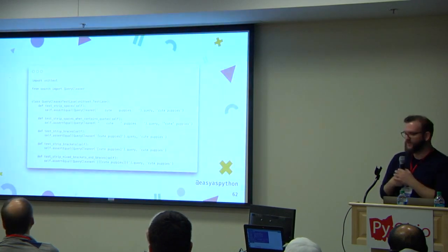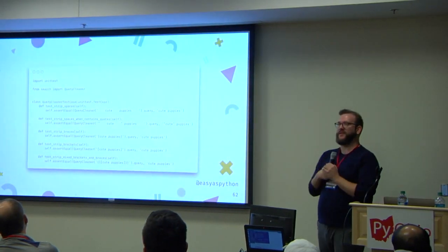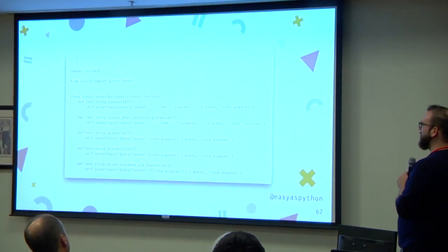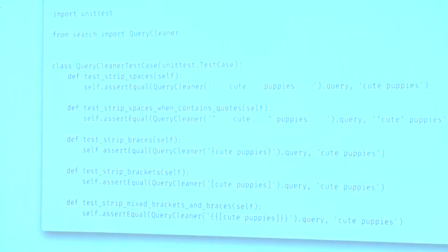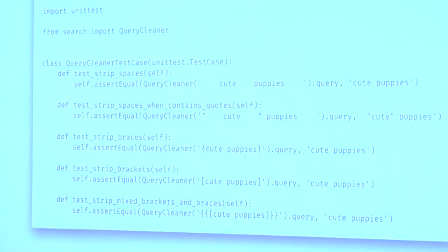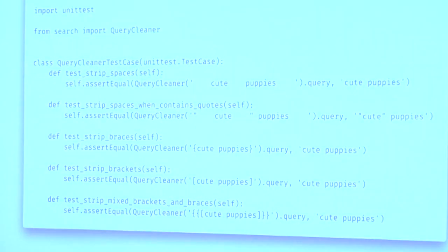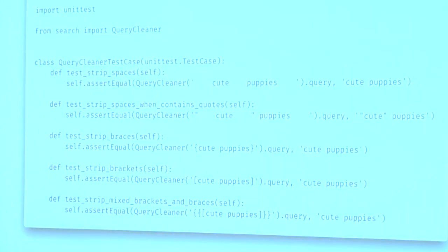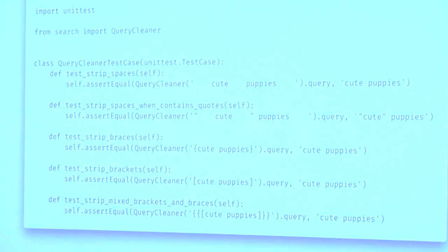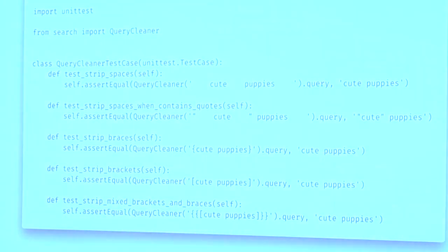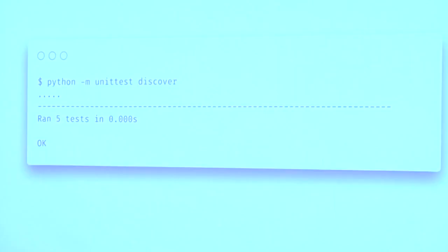Let me talk about parameterization. Imagine you have a search module with a query cleaner class that takes search queries and turns them into a canonical form — stripping extra spaces, stripping quotes and spaces, stripping square brackets or curly braces. You'd have a test for each of those different cases, which is a good practice. Running that gives you five passing tests. If you want to make the code shorter, you could split tests by behavior — one test case for stripping spaces, one for brackets — giving you two passing tests.